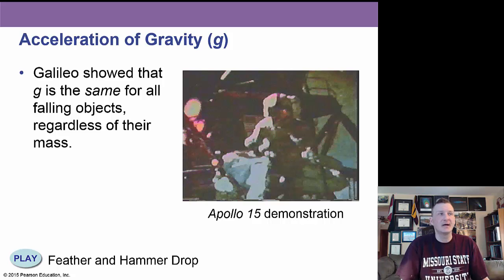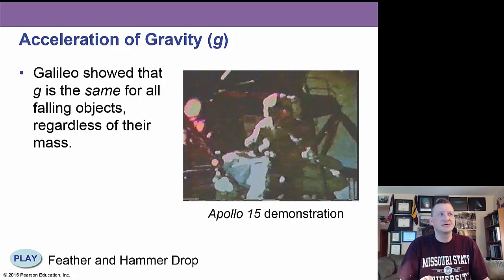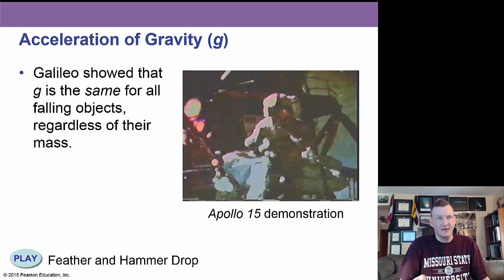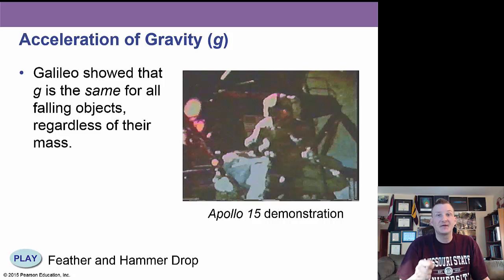Galileo showed that G — the value of g, 10 meters per second squared — is the same for all falling objects regardless of their mass. At the Apollo 15 mission on the Moon, they dropped a hammer and a feather at the same time. It's an iconic video — they both dropped to the surface of the Moon at the same time.